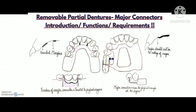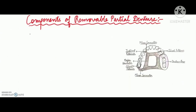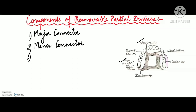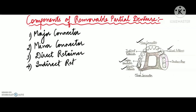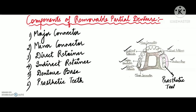In my previous video I have already given you a brief overview about the removable partial denture components. The removable partial denture consists of the following six main components, each with specific functions and requirements essential for successful treatment of the partially edentulous patient: major connector, minor connector, direct retainer, indirect retainer, denture base, and prosthetic teeth. In today's video we will talk about major connectors, their functions and requirements.